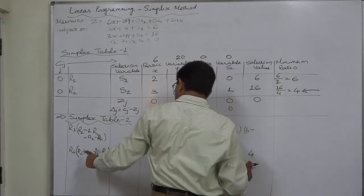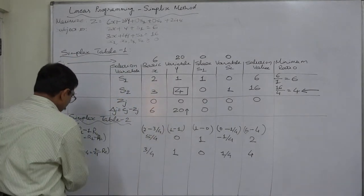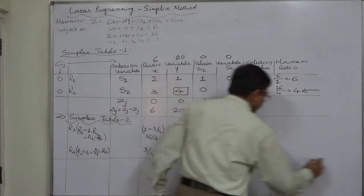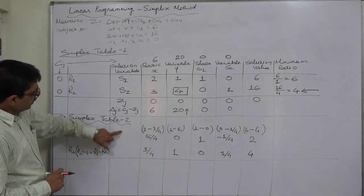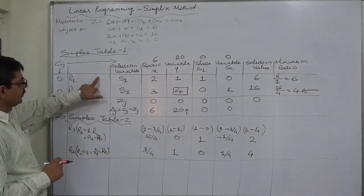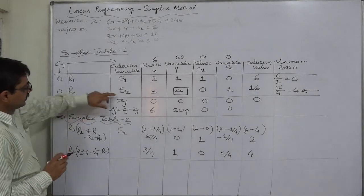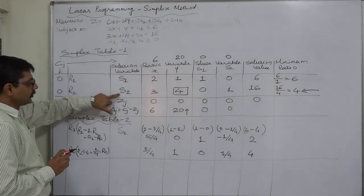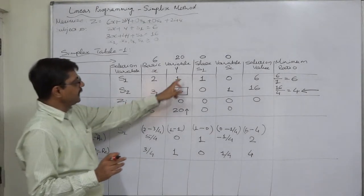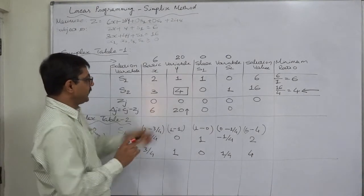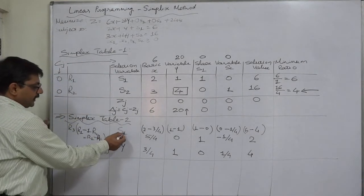First we have to write the solution variables. There will be no change in the solution variable in a row other than the key row, so s1 will be as it is at its place. But r2 was key row, its variable will be dropped—s2 is dropped—and the variable of key column will take its place, so we have to write y here.